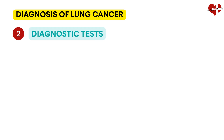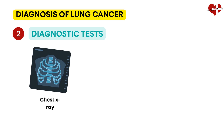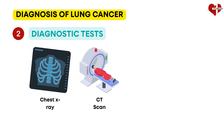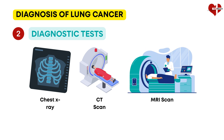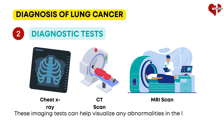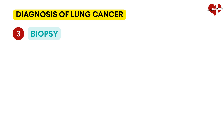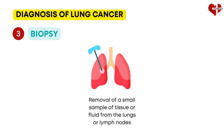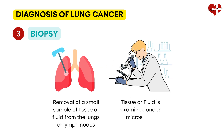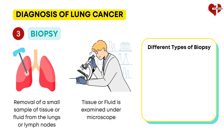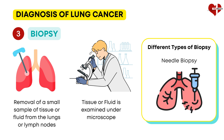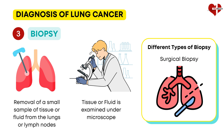These tests may include imaging studies such as chest X-rays, computed tomography (CT) scans, or magnetic resonance imaging (MRI) scans. These imaging tests can help visualize any abnormalities in the lungs and surrounding tissues. In addition to imaging studies, a biopsy is usually necessary to confirm the diagnosis. A biopsy involves the removal of a small sample of tissue or fluid from the lungs or lymph nodes for examination under a microscope. Several types of biopsies can be performed, including bronchoscopy, needle biopsy, and surgical biopsy. The specific type depends on the location and size of the suspicious area.